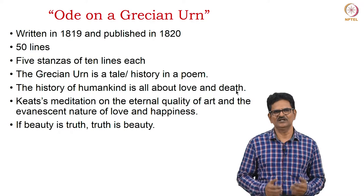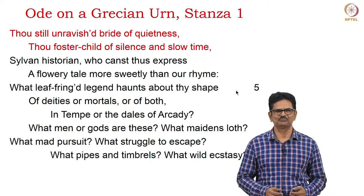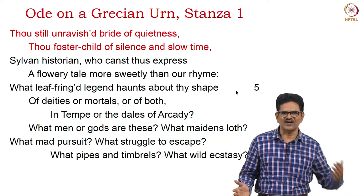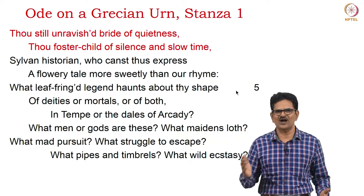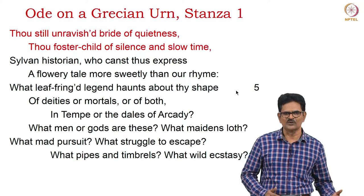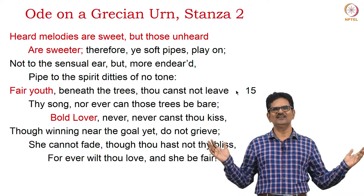The essence of this poem is: 'If beauty is truth, truth is beauty — and that's all we need to know,' according to Keats. Let's begin with the first stanza: 'Thou still unravished bride of quietness, thou foster-child of silence and slow time, sylvan historian who canst thus express a flowery tale more sweetly than our rhyme. What leaf-fringed legend haunts about thy shape of deities or mortals, or of both, in Tempe or the dales of Arcady? What men or gods are these? What maidens loath? What mad pursuit? What struggle to escape? What pipes and timbrels? What wild ecstasy?'